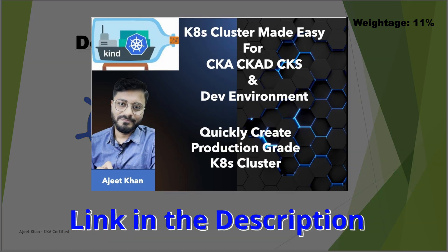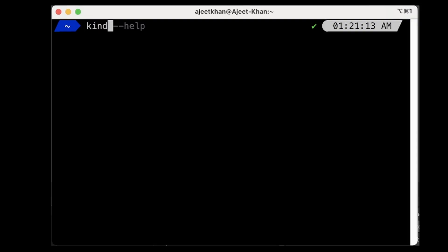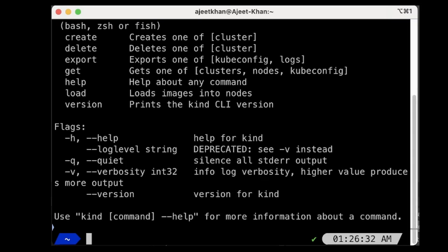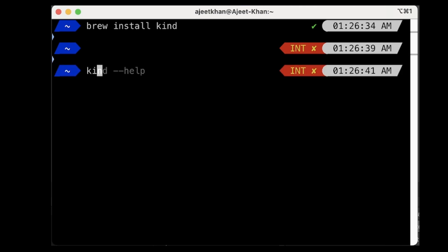I have already shown how you can install Kind and create a single node or multi node cluster, so you can watch that video. In this particular video I am going to use Kind to help you understand how you can debug Kubernetes related errors. I have already installed Kind, so I can just run kind --help and it will show all the options. To install it you can simply run brew install kind, which will install the tool and let you create clusters.